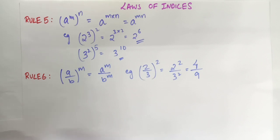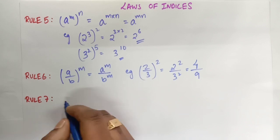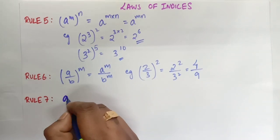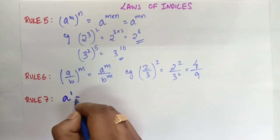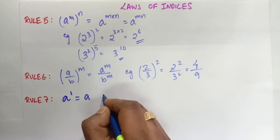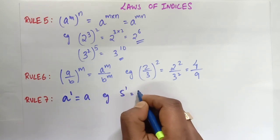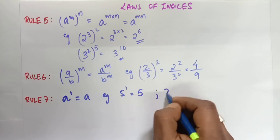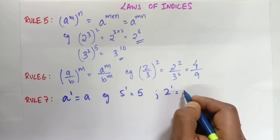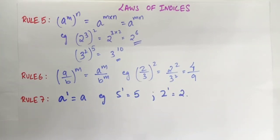Rule number 7: a to the power 1 equals a. This is the simplest rule — anything raised to the power 1 is itself. For example, 5 to the power 1 is 5, and 2 to the power 1 is 2.